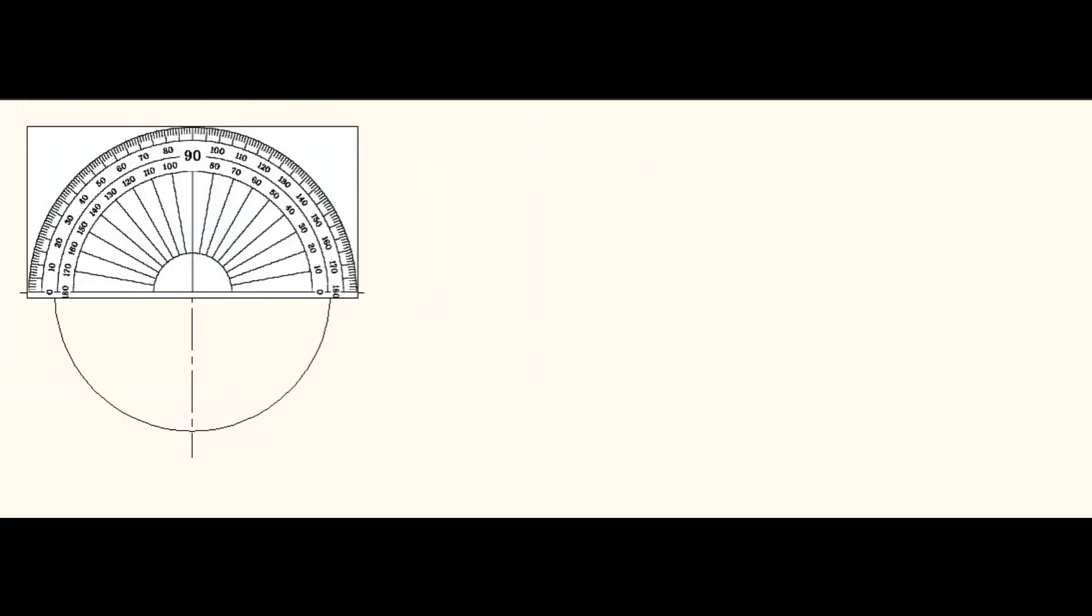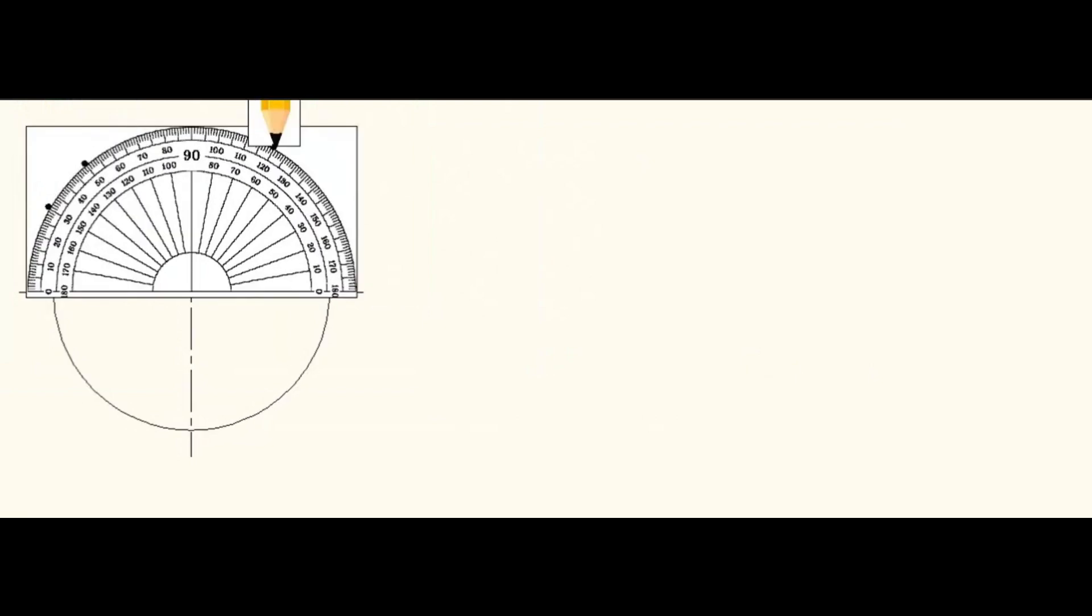Divide the circle into equal number of parts. For dividing 12 parts, each segment can be marked 30 degrees with a protractor.